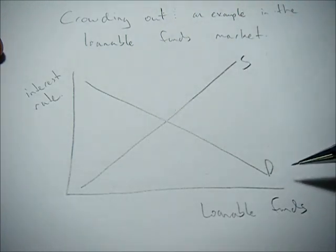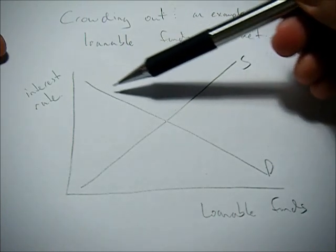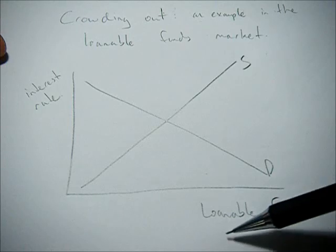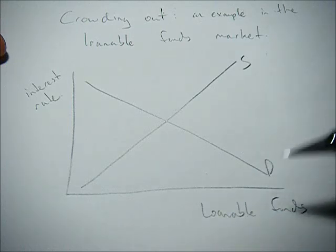This curve shows us the demand for loanable funds. So firms, consumers, the government, they would like to borrow money, and as the interest rate goes down, the quantity of loanable funds they would like to borrow goes up.